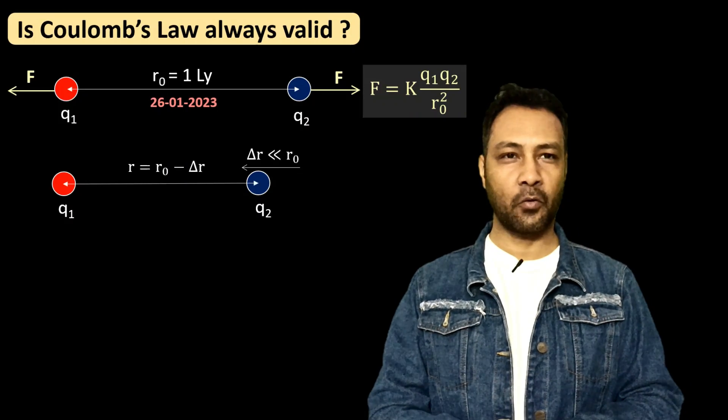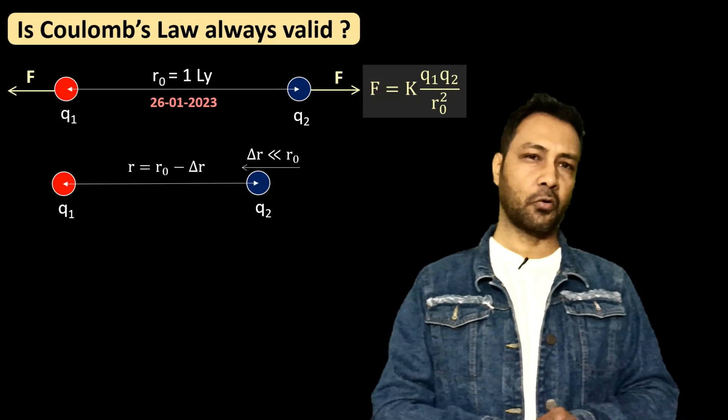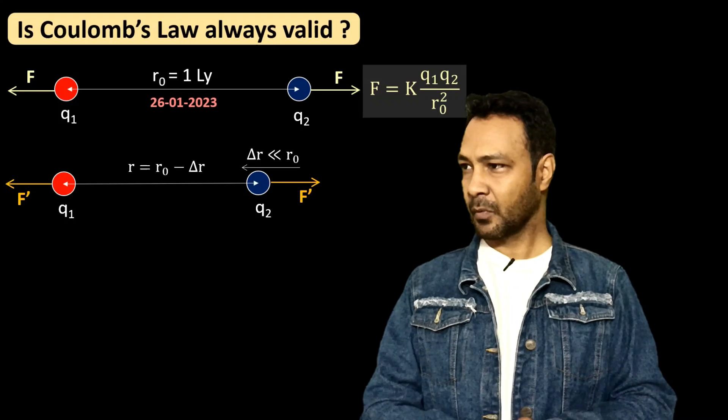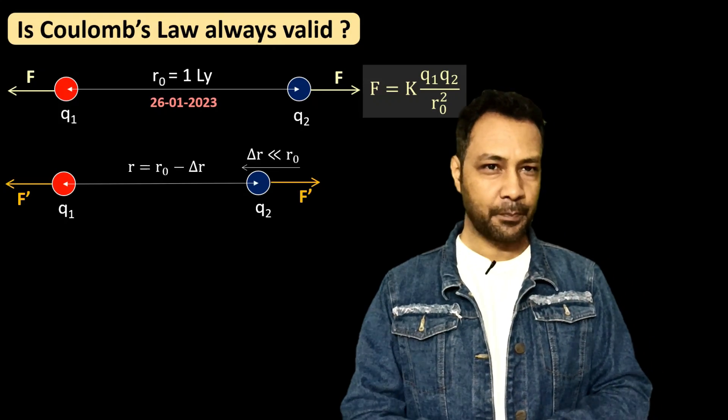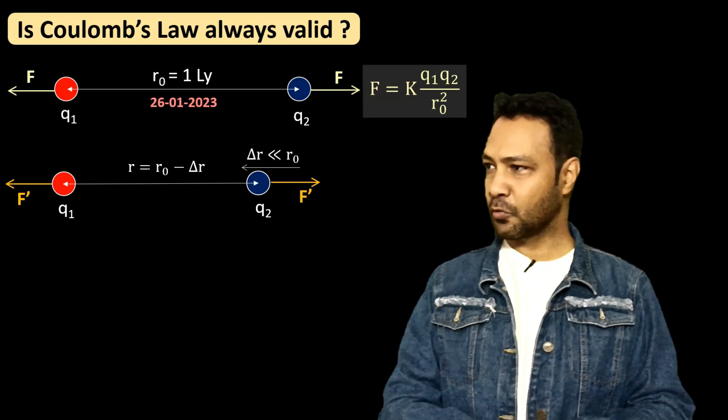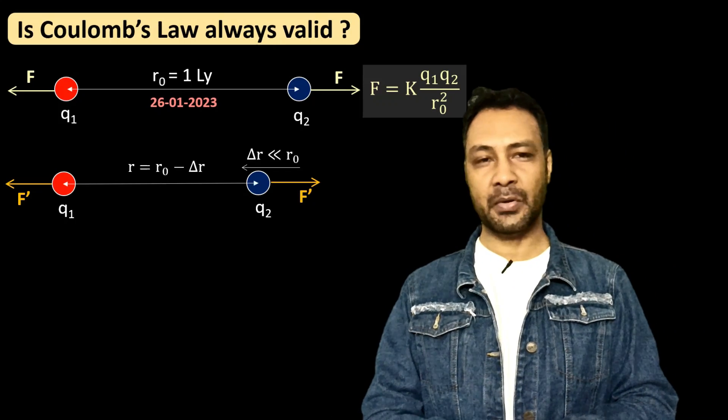The new separation has become r₀ minus Δr. So according to Coulomb's law, what should be the new force between q1 and q2? As the formula says, it should be F' = k q1 q2 divided by new distance r².